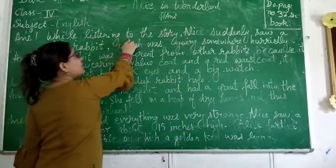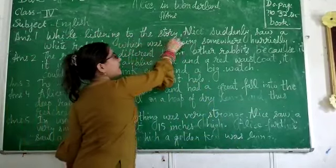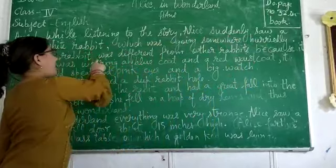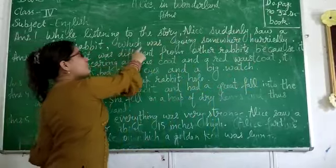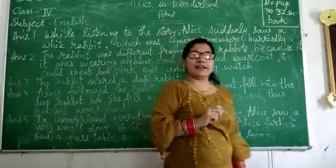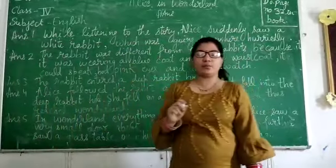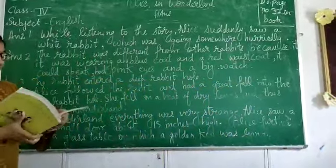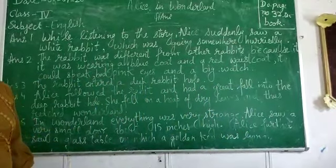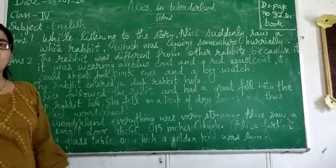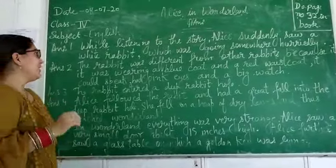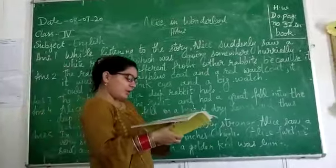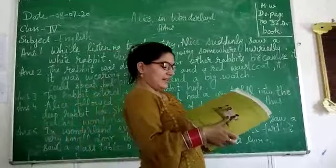While listening to the story, Alice suddenly saw a white rabbit which was going somewhere in a hurry. She saw a white rabbit who was running in a hurry. So the next question is: what was different about the rabbit that Alice saw?